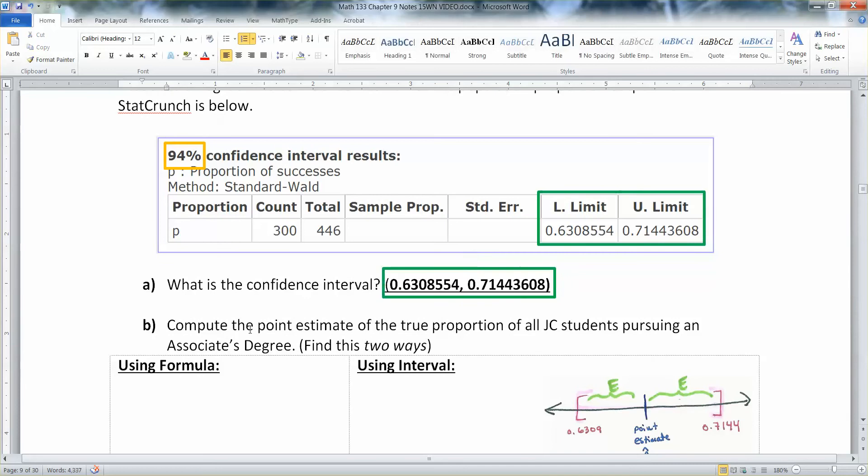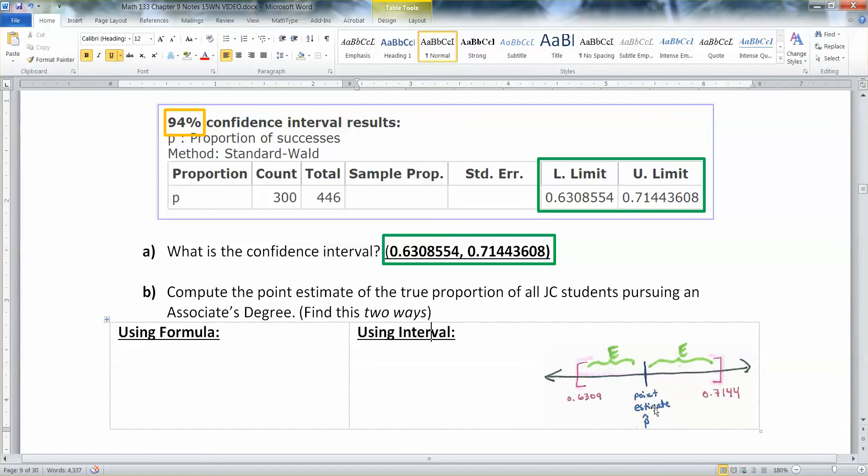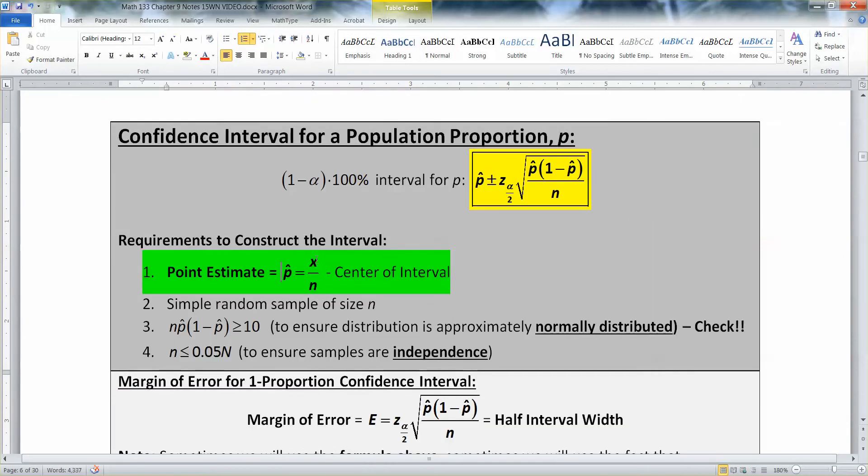Now compute the point estimate two different ways. Remember that your point estimate is the center of your interval, first of all, but it's also p-hat. Let me rewind back to the formula. Point estimate is p-hat, which is x over n, and that is the center of your interval.